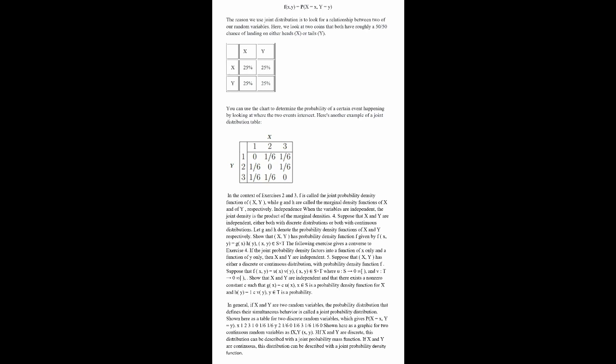In the context of X is 2 and 3, F is called a joint probability density function of X comma Y, while G and H are called marginal density functions of X and Y respectively.